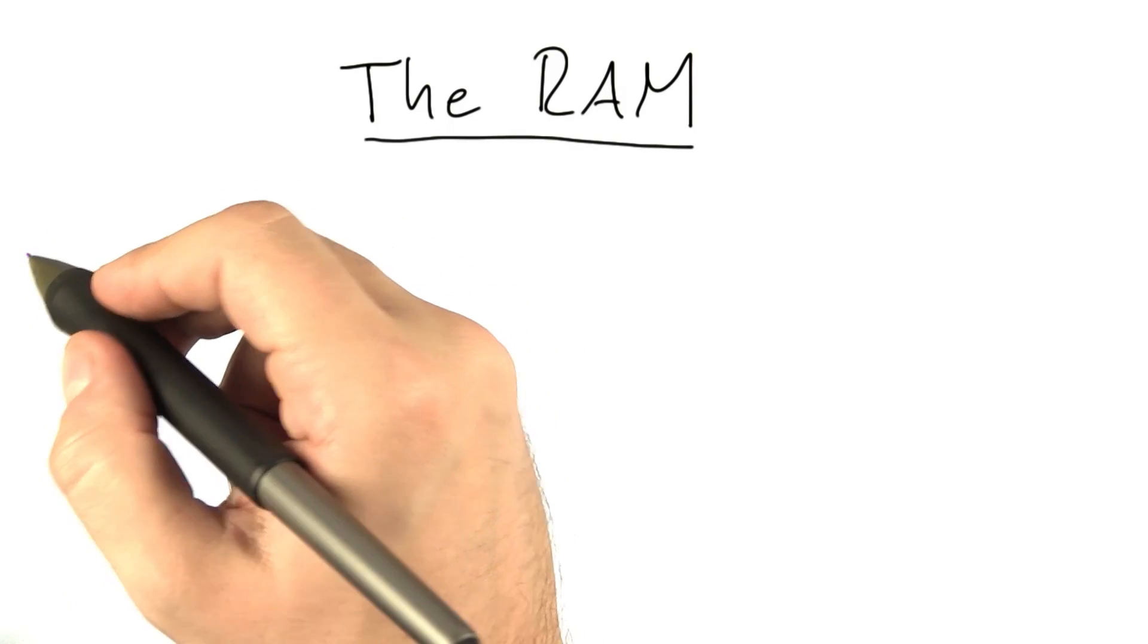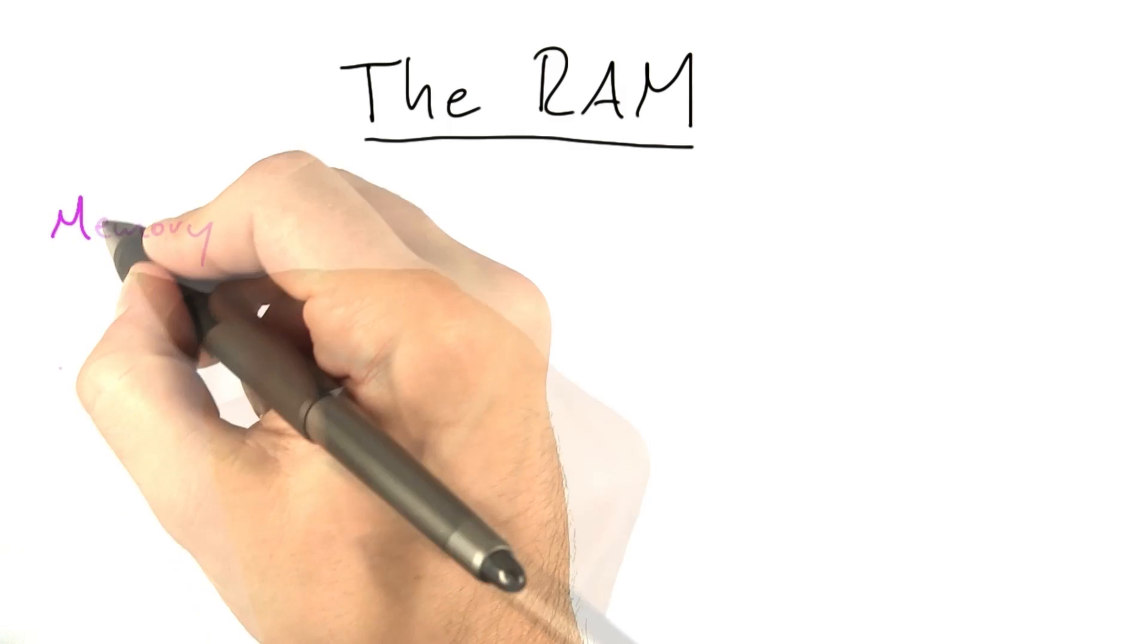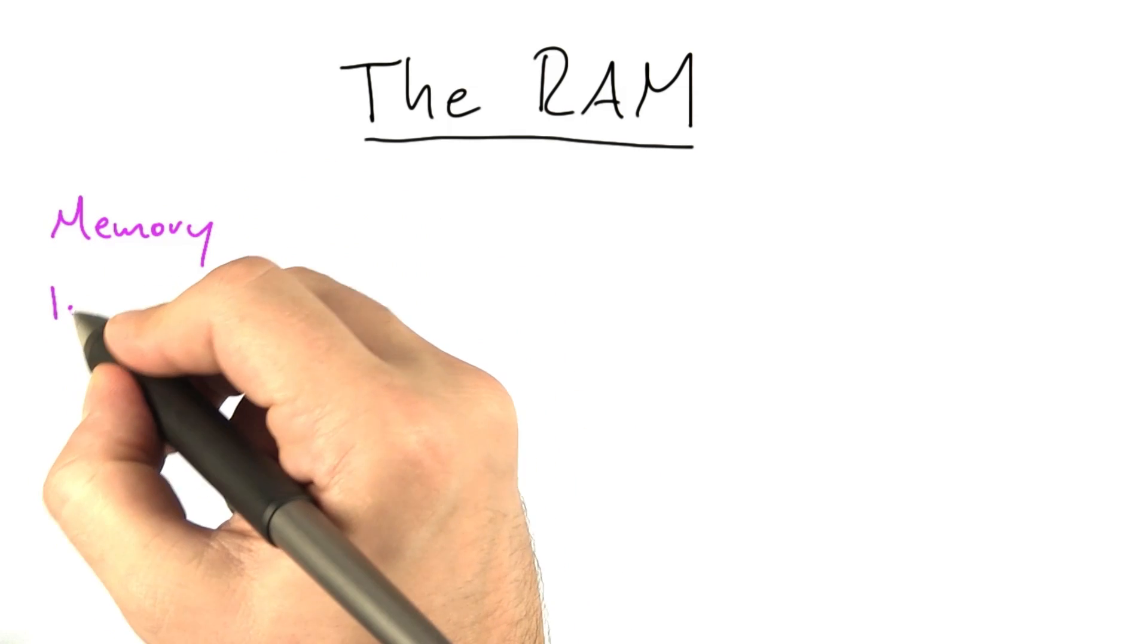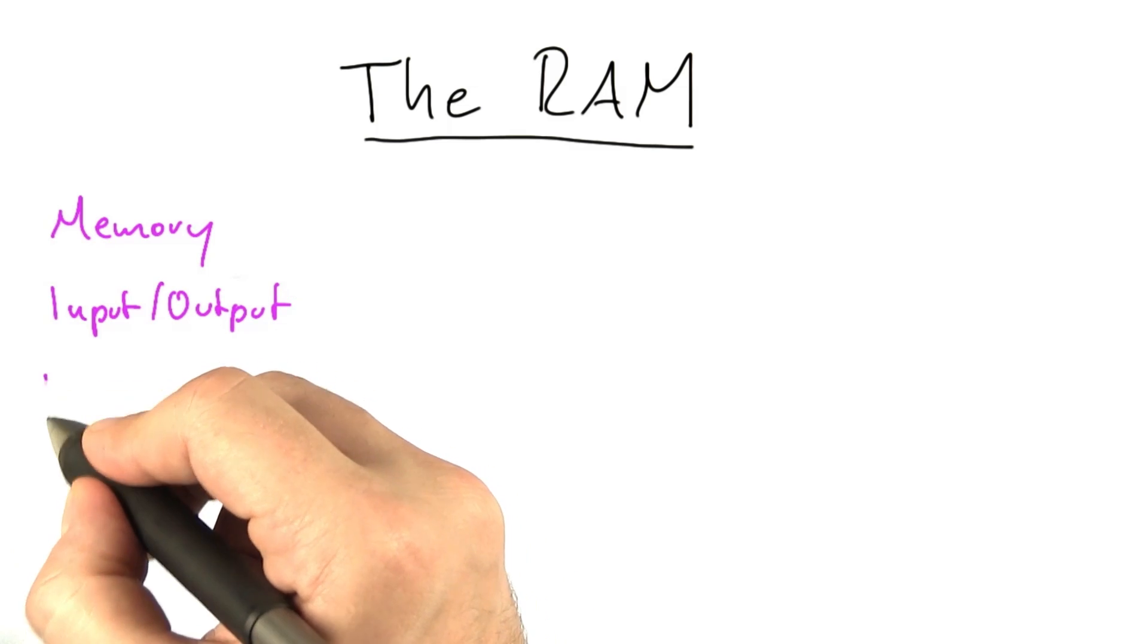As we saw in the quiz, there are three things that our basic machine model needs to have: memory, input-output capabilities, and programming capabilities.